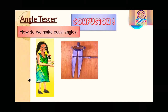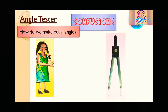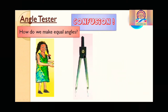This is the angle tester. This knob can be put on one point and this knob on another point, and we can open it up to the angle. You might have seen this kind of angle tester in your geometry box, so you can use that also.